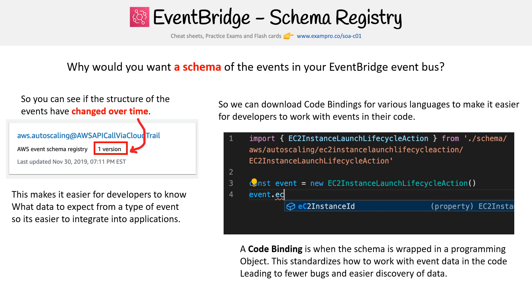A code binding is when the schema is wrapped in a programming object that is standardized — it standardizes how to work with the event data in the code, leading to fewer bugs and easier discovery of data.